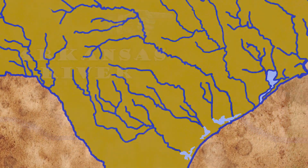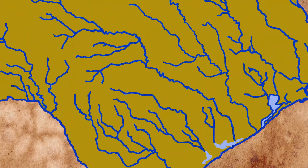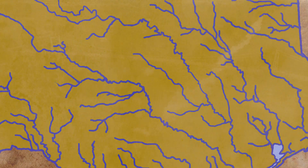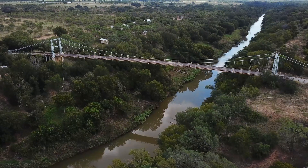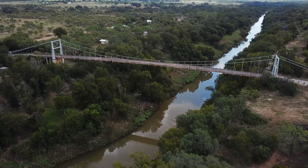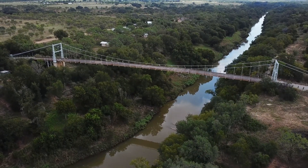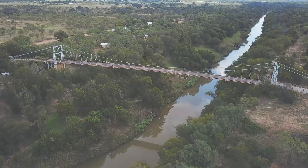In the second part of this lesson, we will look at the rivers that flow entirely within the state of Texas.